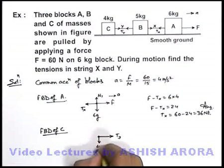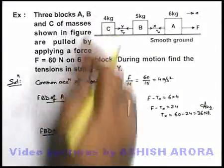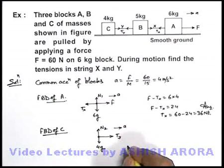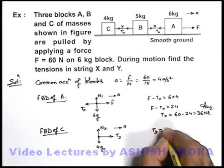In vertical direction it is experiencing the weight 4g and a normal reaction N2 in upward direction by the ground. It is also moving forward with an acceleration A, so its equation of motion we can simply write as T_Y is equal to m*a.